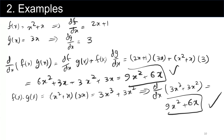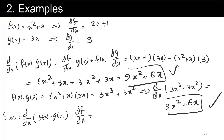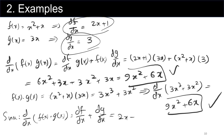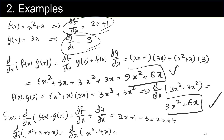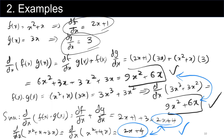Now let's see an example of the sum rule for differentiation. We want to find the derivative of f of x plus g of x. As we said, it is the derivative of f with respect to x plus the derivative of g with respect to x, which is 2x plus 1 plus 3, giving 2x plus 4. We can verify this another way: the derivative with respect to x of x squared plus x plus 3x, which is the derivative of x squared plus 4x, giving 2x plus 4. As you can see, these two values are the same.